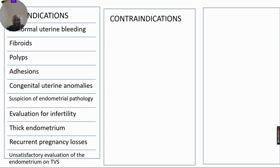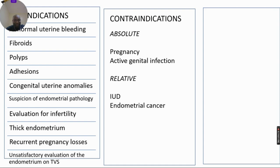The contraindications are absolute and relative. Pregnancy and active genital infection are absolute contraindications. Relative contraindications are intrauterine device and suspected endometrial cancer. The procedure is well-tolerated with an infection rate of less than 1%.